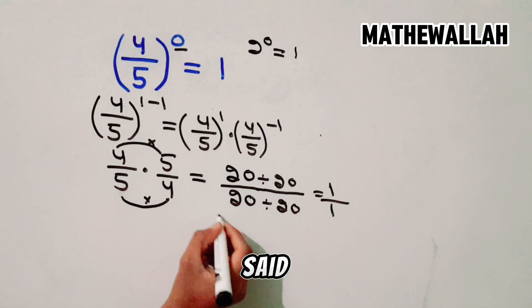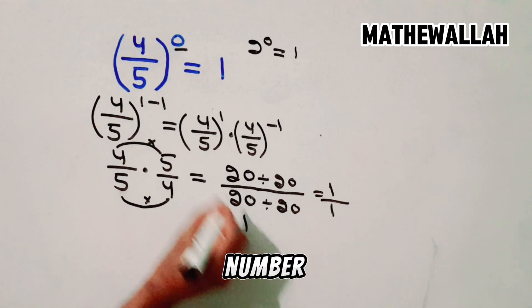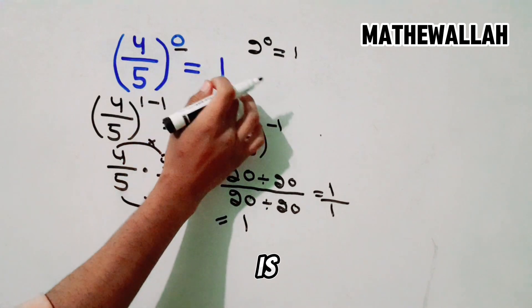So that's why we said that any number power 0 is equal to 1.